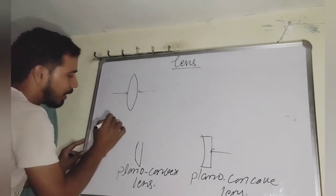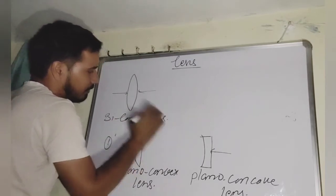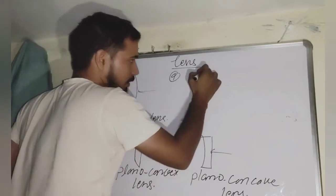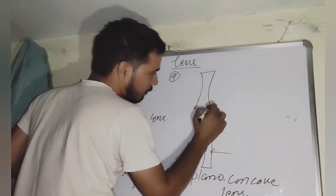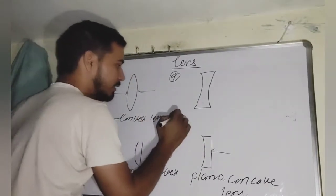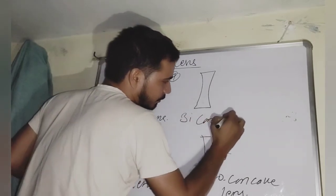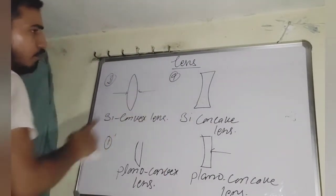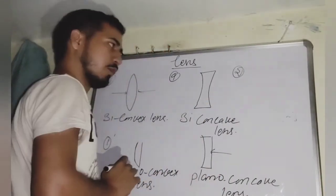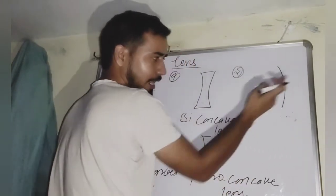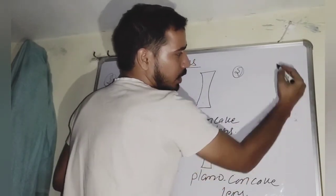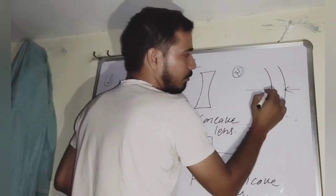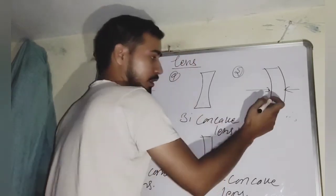If both the right surface and the left surface are convex type, such a lens is called a bi-convex lens. A fourth type: if both curved surfaces are concave in shape, such a lens is called a bi-concave lens. A fifth type: if the first surface from the right side is convex and the second from the left side is concave, that type of lens is called a convexo-concave lens.